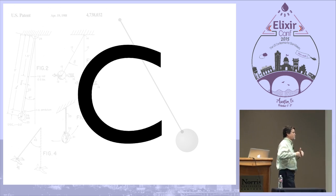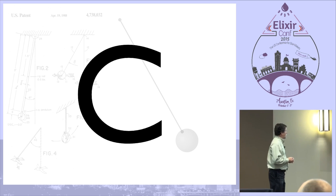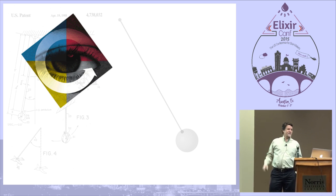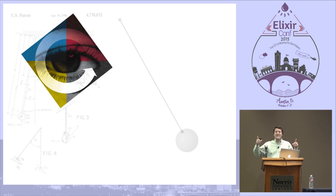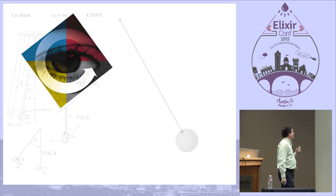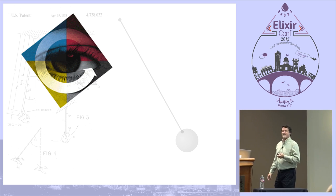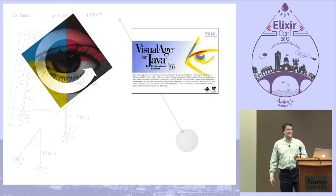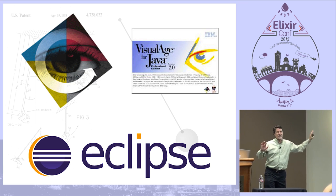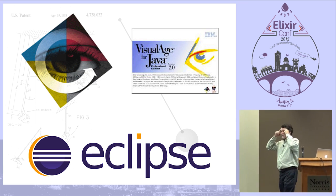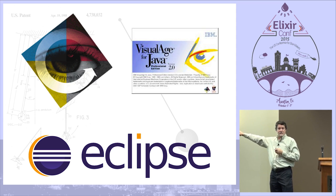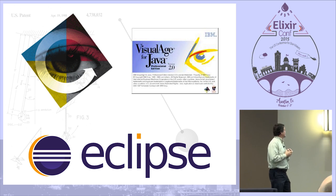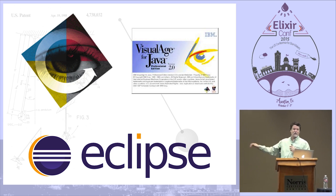IBM made another bet. We bought a company called OTI — Object Technology International. Does anybody know what that icon is? Visual Age. Visual Age for Smalltalk, which turned into Visual Age for Java, which turned into Eclipse. Put your conspiracy glasses on: that blue and white striped thing is in front of the sun — Sun, Java, IBM logo. Anyway, Microsoft also knew we had a problem. They attacked the enterprise in a very different way.